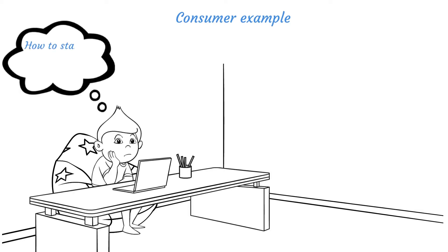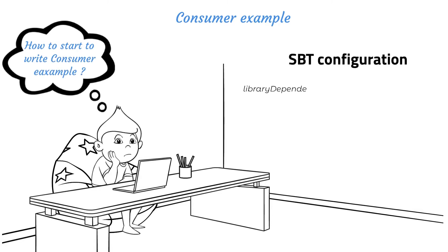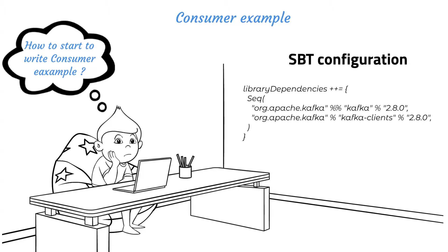First of all, in Scala we have to configure SBT and we're going to add two libraries. The first library is Kafka and the second is Kafka clients. Be sure that both of these libraries are going to be the same version.